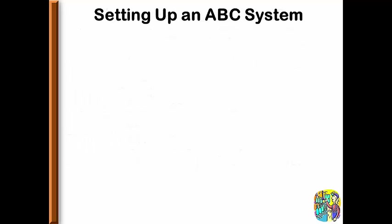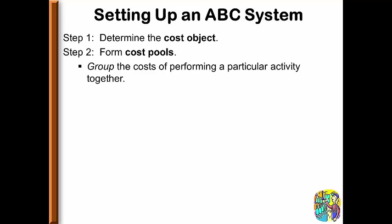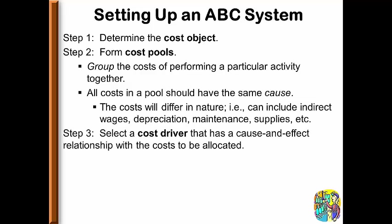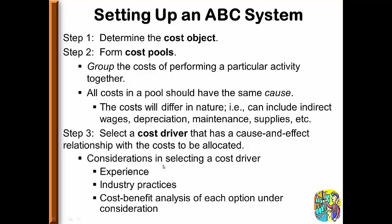To set up an ABC system, a company first determines the cost object. Then the company forms cost pools by grouping the cost of performing a particular activity together. All costs in a pool should have the same cause — not necessarily the same type of cost, but they should exist because of the same activity. Items such as indirect wages, depreciation, supplies, and maintenance can be included together; some can be fixed, some variable. Next, we select the cost driver that has the cause-and-effect relationship with the costs in each pool. Managers consider their experience, industry practices, and a cost-benefit analysis of each option.